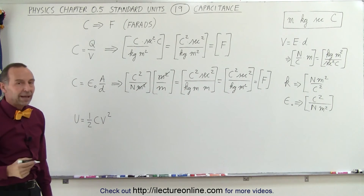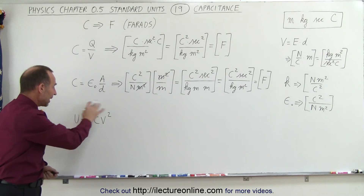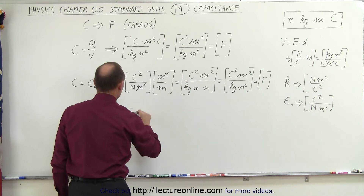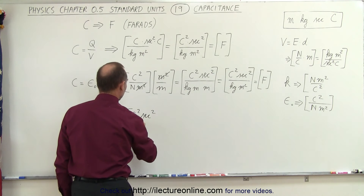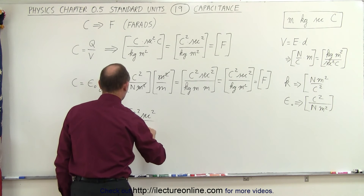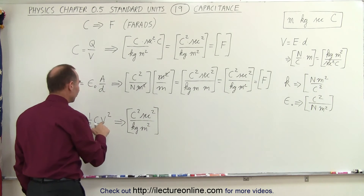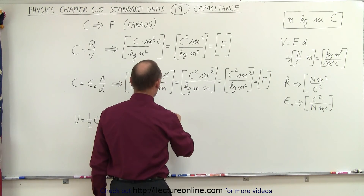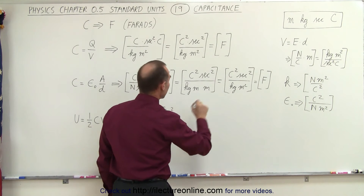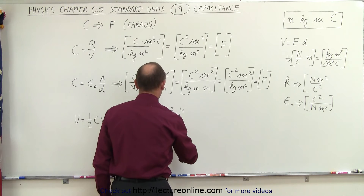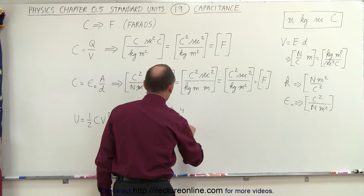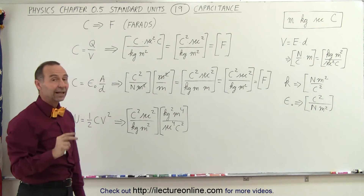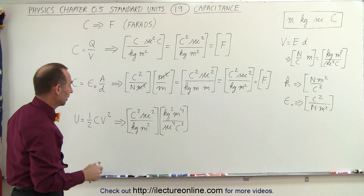Finally, let's look at the energy stored in a capacitor. Energy should be in joules, so let's verify that one-half CV² gives us joules. The units of capacitance are coulombs squared times seconds squared divided by kilograms times meters squared. We multiply by voltage squared — kilograms squared times meters to the fourth power divided by seconds to the fourth power times coulombs squared — because we must square all the units of voltage.